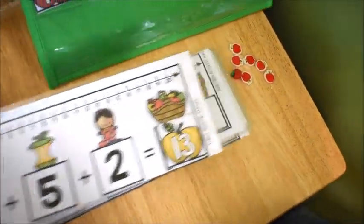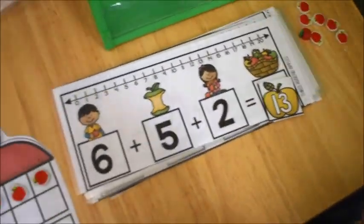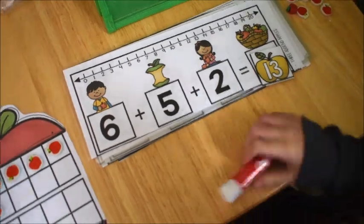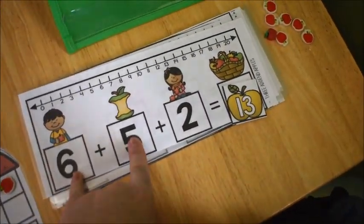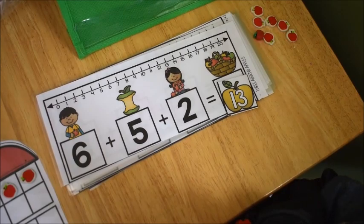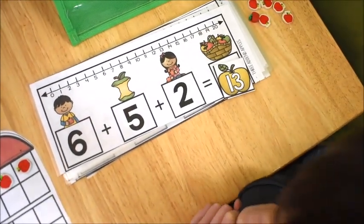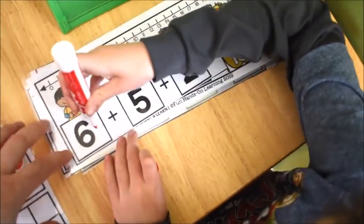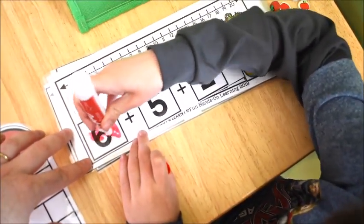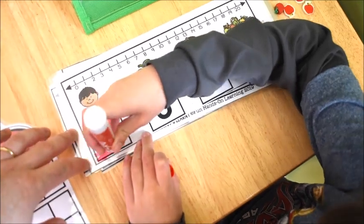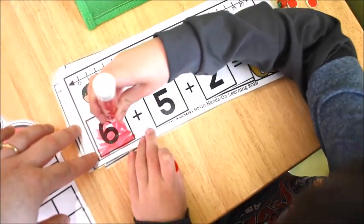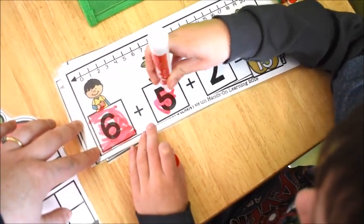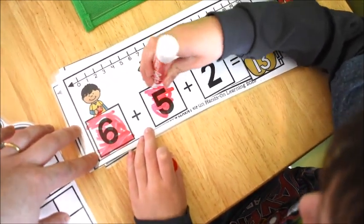Now let me show you another way you could do this. Take the dry erase marker, and you're going to color in the two numbers that you added first. So you added six and five first. That made eleven, and then you added two more and made thirteen. So color the six and the five squares.